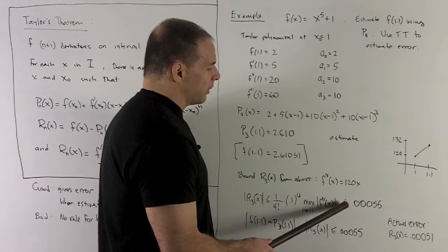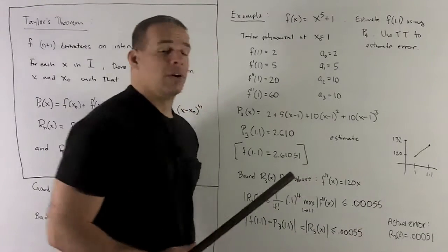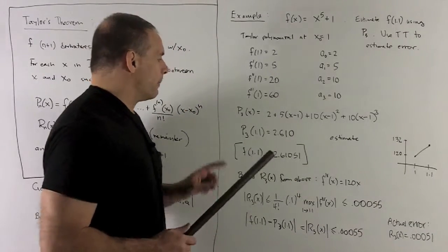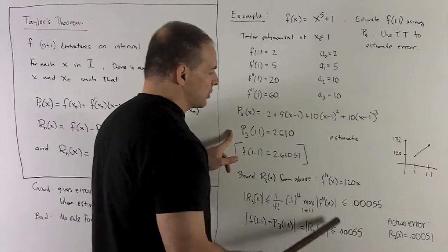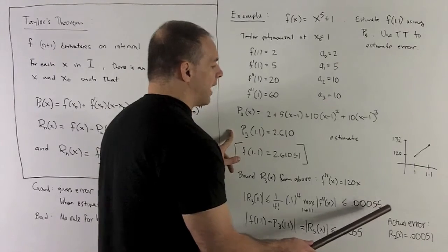We're going to be less than or equal to 0.00055 for error. My estimate is going to be 2.610, and we know that the error in this estimate is going to be bounded by 0.00055.